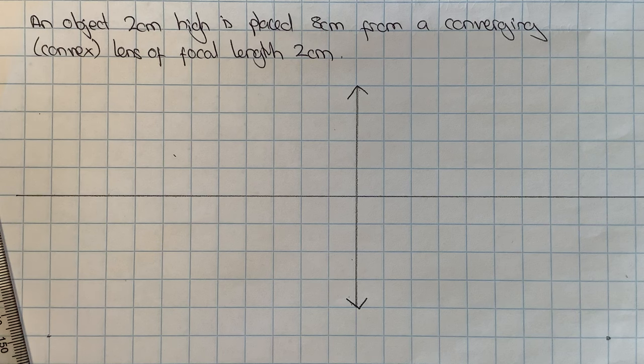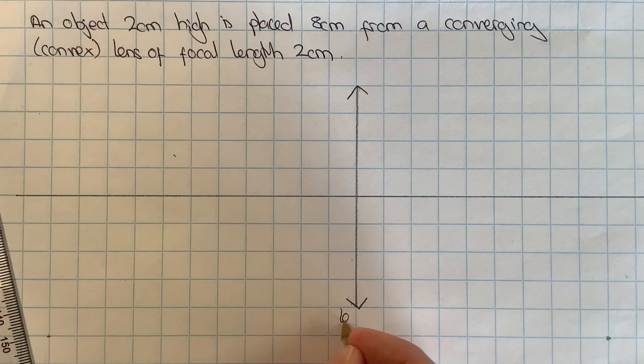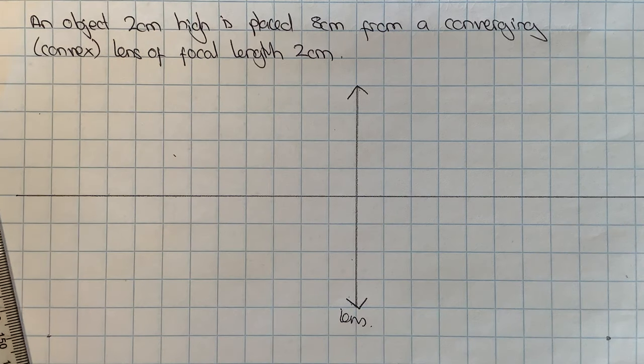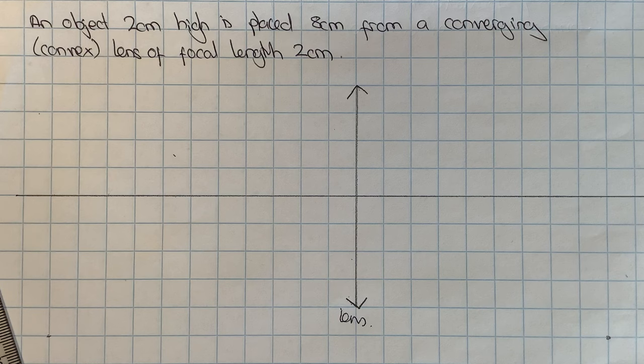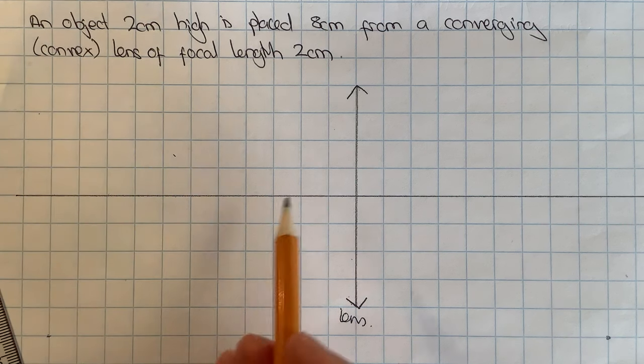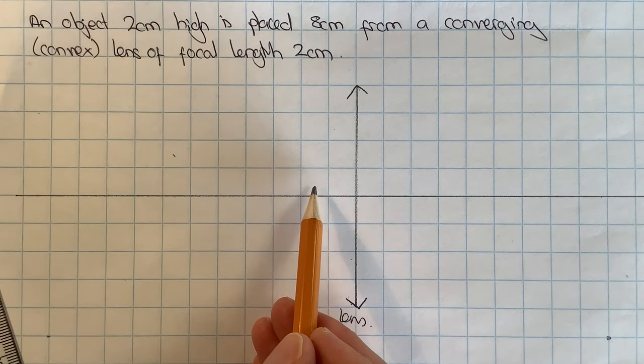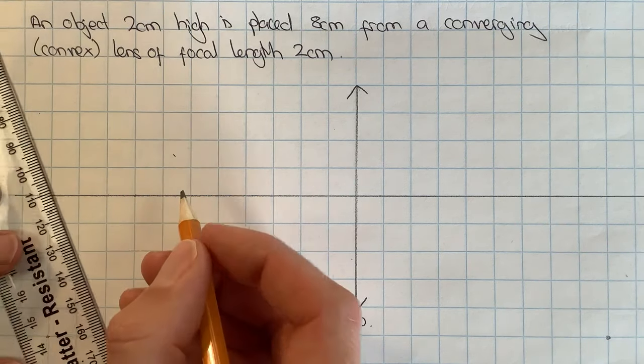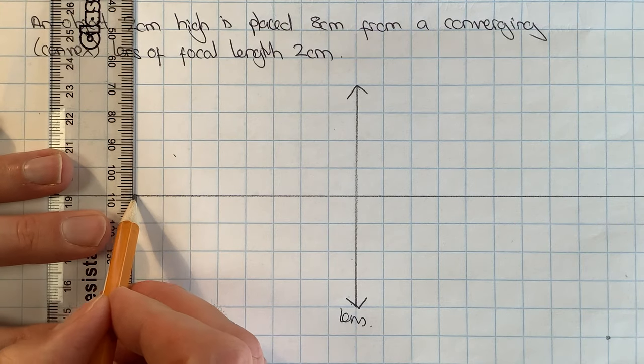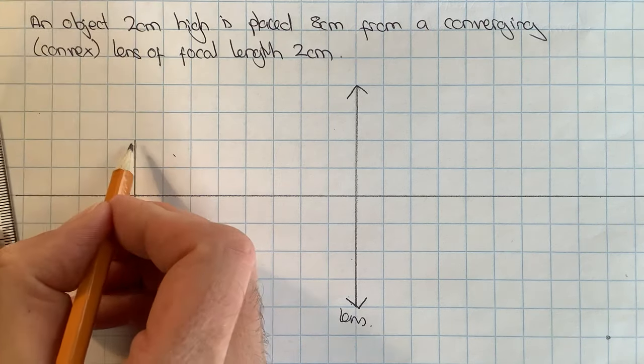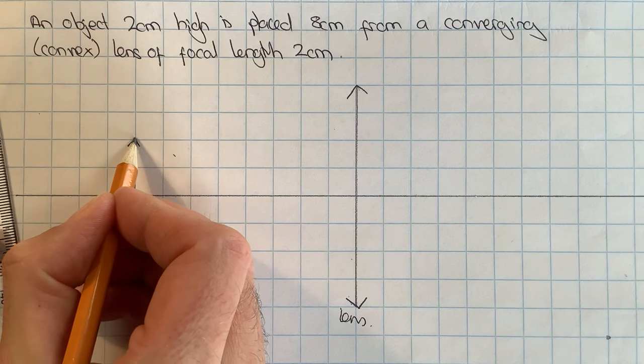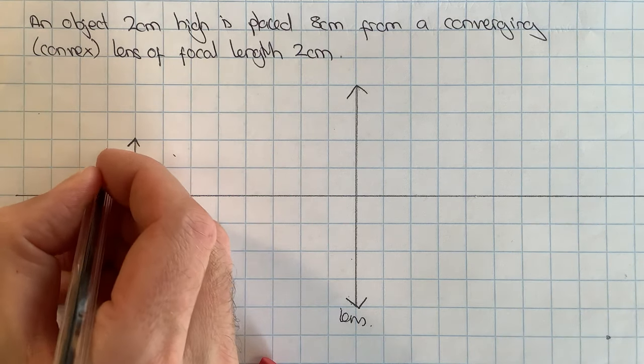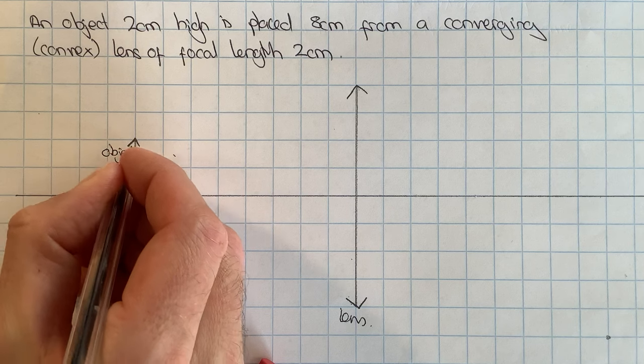So I've drawn in my lens and I'll label that as the lens. Now I need to mark in the object. It says an object two centimeters high is placed eight centimeters away. So I'm going to mark in my object, which is going to be one, two, three, four, five, six, seven, eight centimeters away. For my object I'm going to make it two centimeters high, and so I know which way up it is I'm going to put a little arrow on the top of it and I'm going to label that in pen as the object.